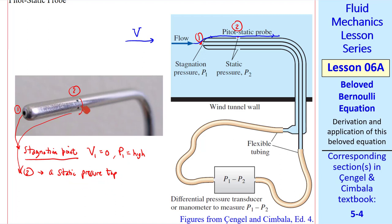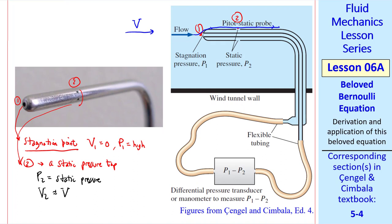Static pressure tap is a hole normal to the flow. You can see that that's the case here. So P2 is the static pressure. And V2 is approximately the same as V, where V is the speed we're trying to measure. That's because this probe is so slender and long here that the flow adjusts itself and the speed here is the same as the speed here approximately.